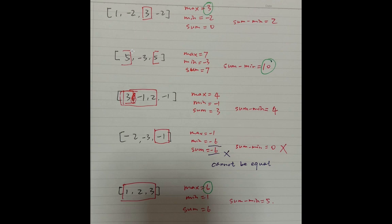Let's see some examples. If the given array is [1, -2, 3, -2], we know the maximum subarray sum will be 3. And we use Kadane's algorithm to find the minimum subarray sum, which is -2. We also calculate the sum of the whole array. We find that the max subarray sum is also the maximum circular subarray sum — because connecting the array still gives maximum sum of 3.